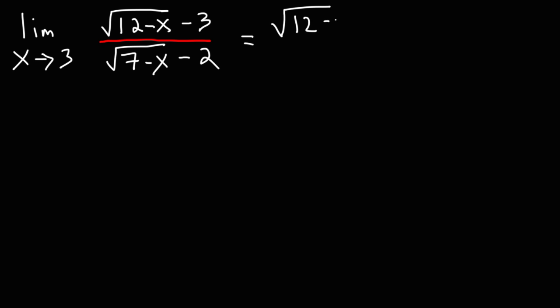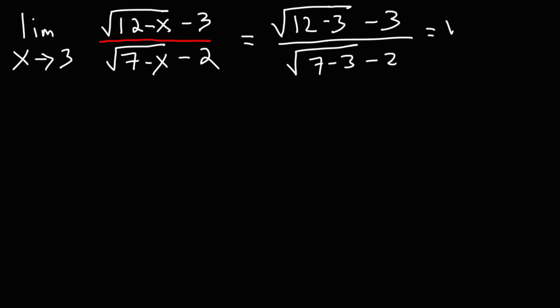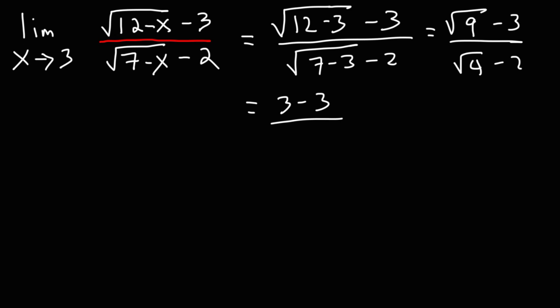So we're going to have the square root of 12 minus 3, minus 3, divided by the square root of 7 minus 3, minus 2. Now 12 minus 3 is 9, and 7 minus 3 is 4. The square root of 9 is 3, and the square root of 4 is 2. So 3 minus 3 is 0, and the same is true for 2 minus 2.